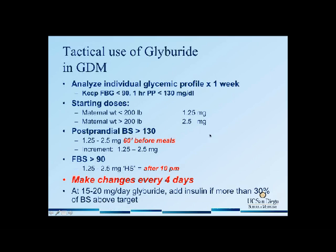We initiate patients on glyburide based on the patient's weight. If they weigh less than 200, I usually start glyburide at 1.25 milligrams. If they weigh greater than 200, then I start glyburide at 2.5 milligrams.